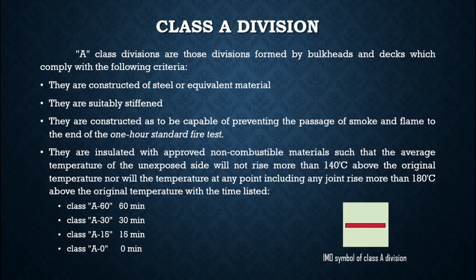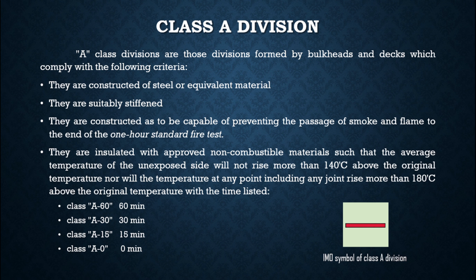For example, if ambient temperature is 40°C, the total temperature of the unexposed side will be 180°C, which is 140° above the ambient. On the basis of their fire resistance duration, Class A divisions are further classified as Class A60, which resists smoke and flame for 60 minutes; Class A30, for 30 minutes; Class A15, for 15 minutes; and Class A0.